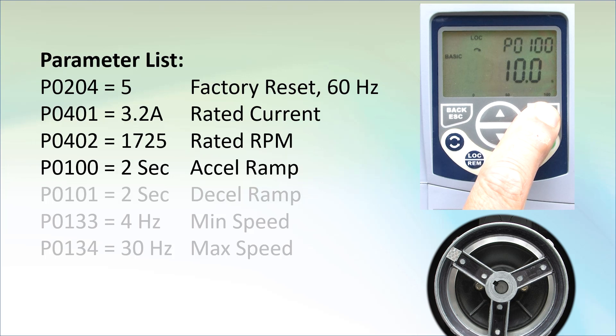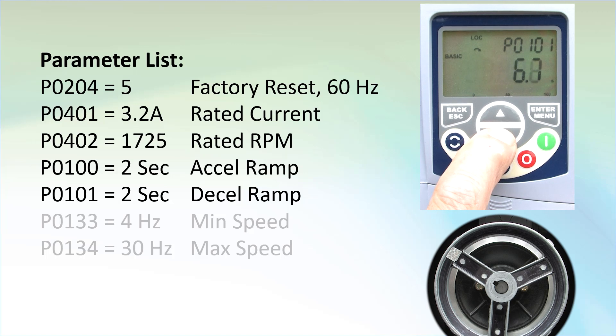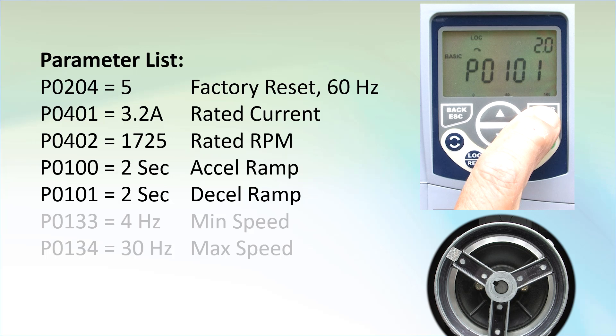Enter to change it. This motor doesn't have any load on it so let's change the acceleration to something really short to help speed up the video. How about 2 seconds. Enter to accept. Up arrow to deceleration and change it to 2 seconds too. Just so we don't have to wait a long time for the motor to spin up or down during the video.